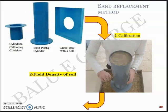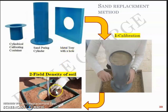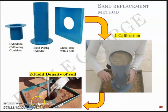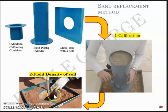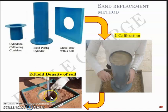The second step is to go out to the field. Using the metal tray with a hole in the center and a chisel or excavating tool, you dig a hole and take the field soil out into the tray. Make sure you don't lose any soil — every particle dug out should be kept in the tray because that is the mass we are interested in. Find the mass of the soil in the tray. The whole purpose of the sand calibration is to find the volume of that irregular hole.